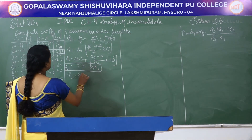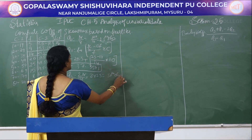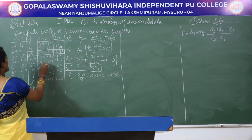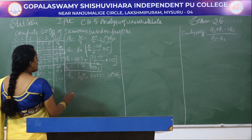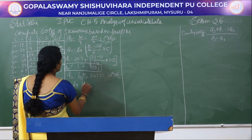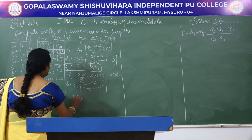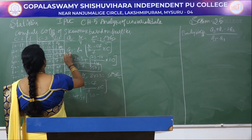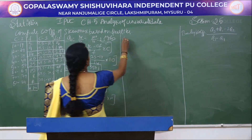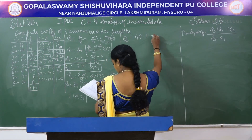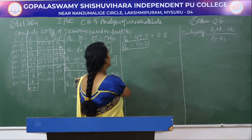Next, find Q2. Q2 is 2N by 4 = 2 into 25 = 50th observation. The 50th observation falls in LCF 73, so we block that interval. Q2 equals L plus (2N/4 minus CF) divided by F, into C. This is 49.5 plus (50 minus 48) divided by 25, into 10. Q2 equals 49.5 plus 0.8, so Q2 is 50.3.